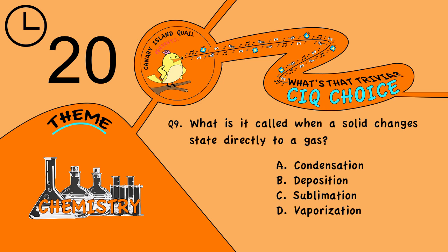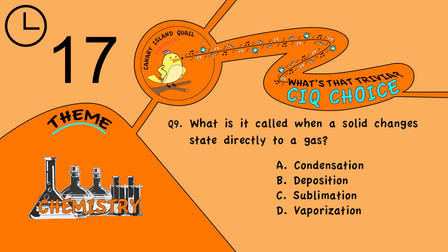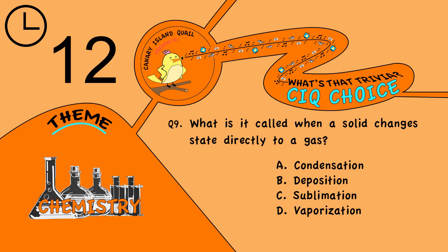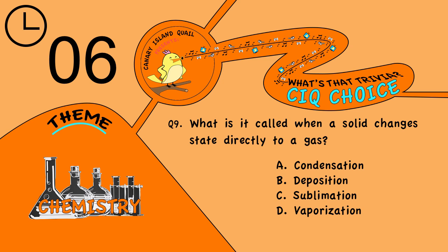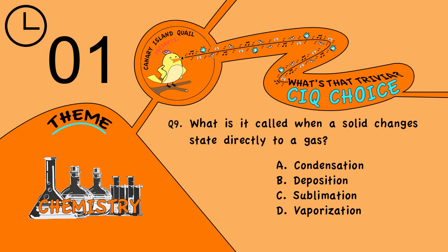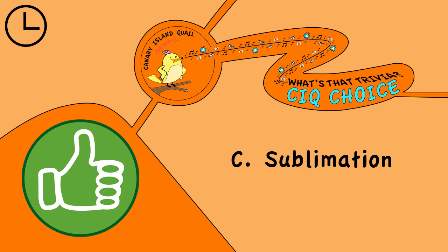Question 9. What is it called when a solid changes state directly to a gas? Is it A, condensation; B, deposition; C, sublimation; or D, vaporization? The answer is C, sublimation.